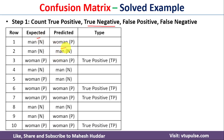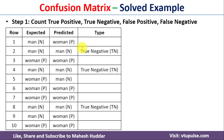Next we calculate the true negative cases. True negative means expected is man and predicted is man. In this data we have 3 cases of true negatives.